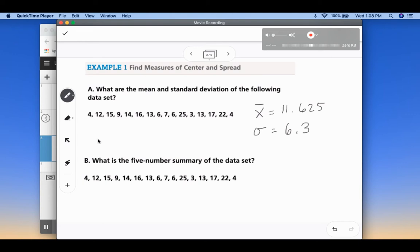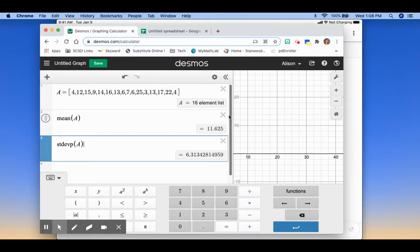So then the five-number summary of the data set, if you remember back to when you first learned about all these different plots, you did box plots. And a box plot needs the five-number summary. So that's the minimum, the maximum, the median, and then Q1 and Q3, which is the first quartile and the third quartile.